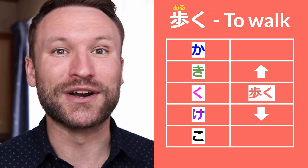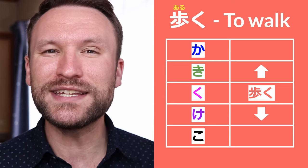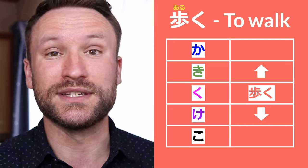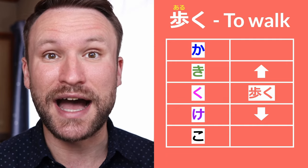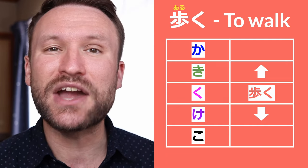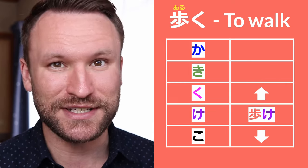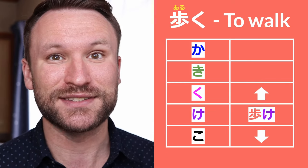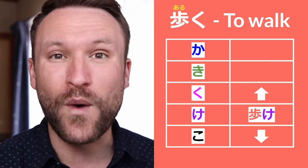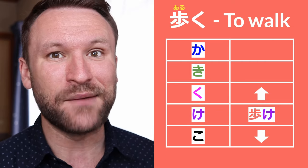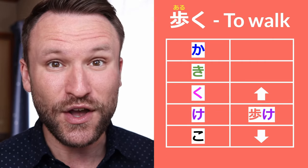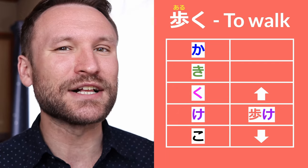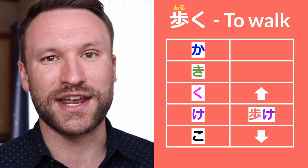To do godankatsuyo — godan conjugation — all we need to do is take that last character in the dictionary form, which is, for example, ku in aruku, and move that character up and down the chart to get the stem for many different conjugations. We then just need to add one decided ending, and we've got a conjugation. That's all it takes. It's super simple. Let's go ahead and take a closer look at each of these conjugations and what they're called in Japanese.